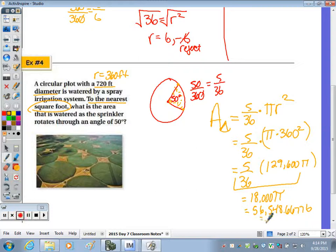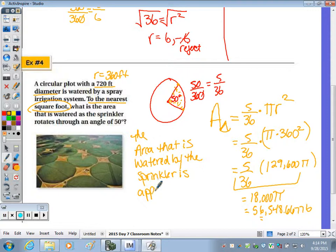I need to round to the nearest square foot. So the area that is watered by the sprinkler is approximately 56,500. I'm sorry, so the nearest square foot. So I'm not rounding where the 6 is. Caught that when I went to answer the question. The nearest square foot is here. So this 6 is going to bump that up to a 9. 56,549 square feet.